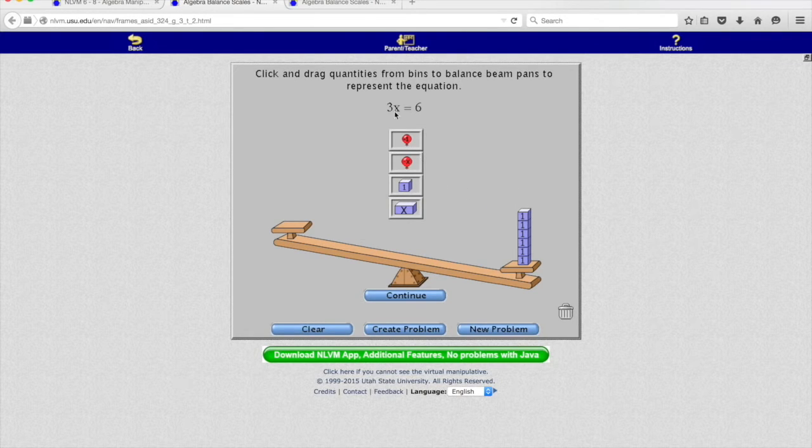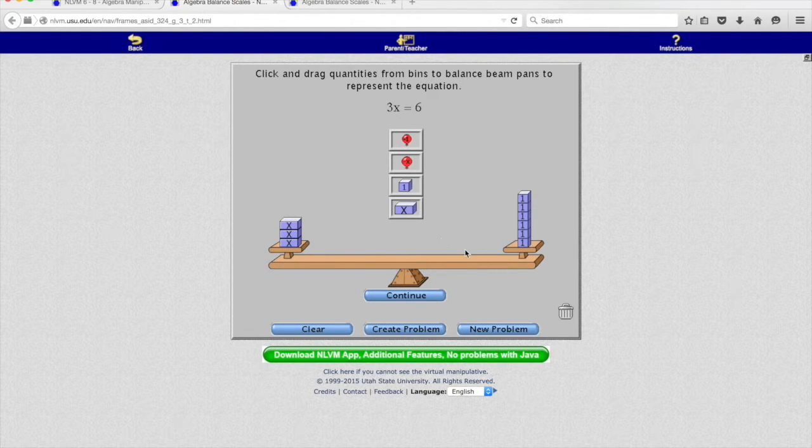And then the 3x, what that represents is instead of having just a single mystery weight, it's saying we have three of them. The coefficient of 3 is saying we have three of these x's, and that balances things out.